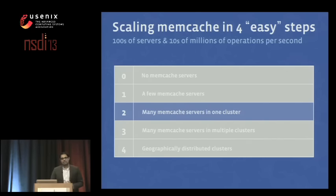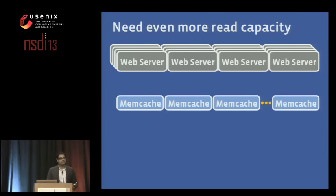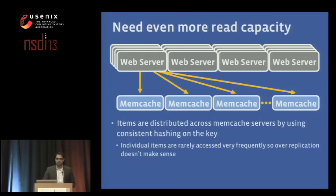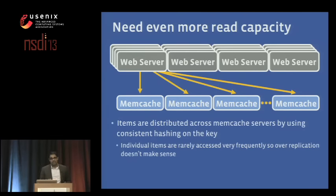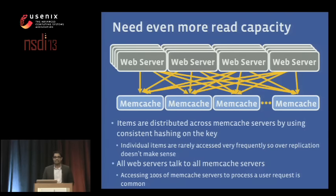Now let's move on to the next step of scaling — hundreds of servers and tens of millions of operations per second. We have more web servers and need more read capacity, so let's add more memcache servers. Items in our cache are distributed through consistent hashing, meaning you take the hash of a key and find the appropriate server. Individual items are rarely accessed, so over-replication doesn't make sense. But if all web servers are doing this, we have a big problem with all-to-all communication: within a short period of time, all web servers will access all cache servers simultaneously, putting enormous strain on our network infrastructure.